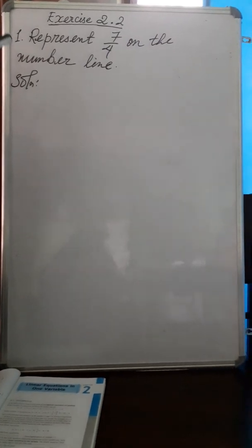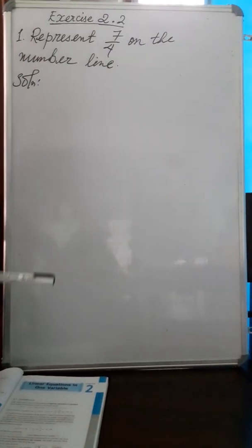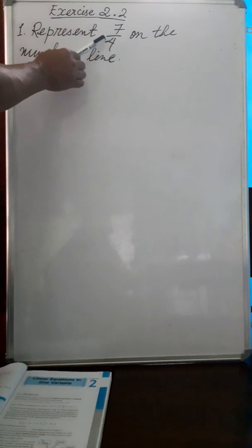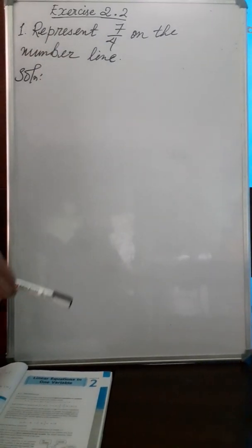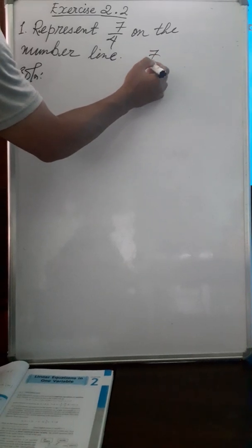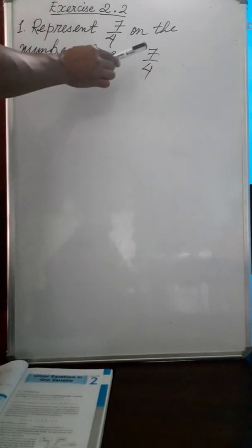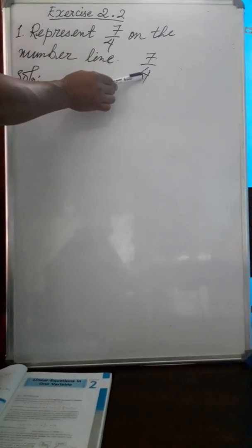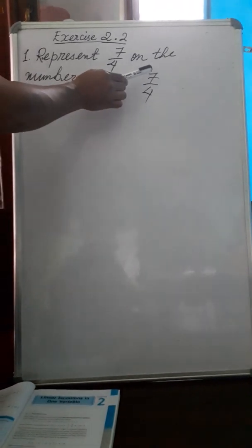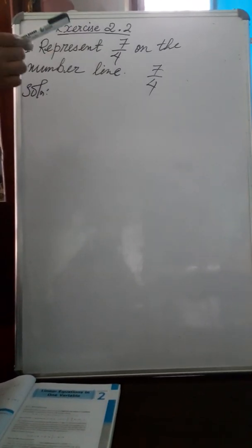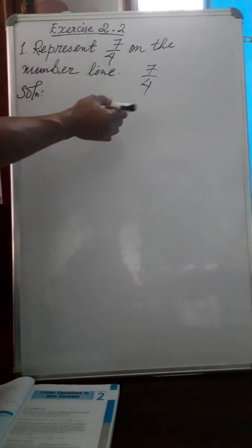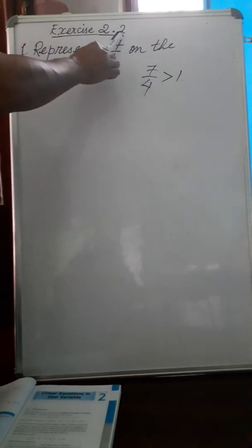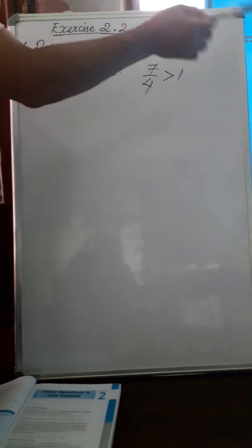We already learned how to represent rational numbers on the number line. Here 7 by 4 is a fraction — specifically, it is an improper fraction because the numerator is greater than the denominator: 7 is greater than 4. Improper fractions are always greater than 1, so on the number line, 7 by 4 will be beyond 1.